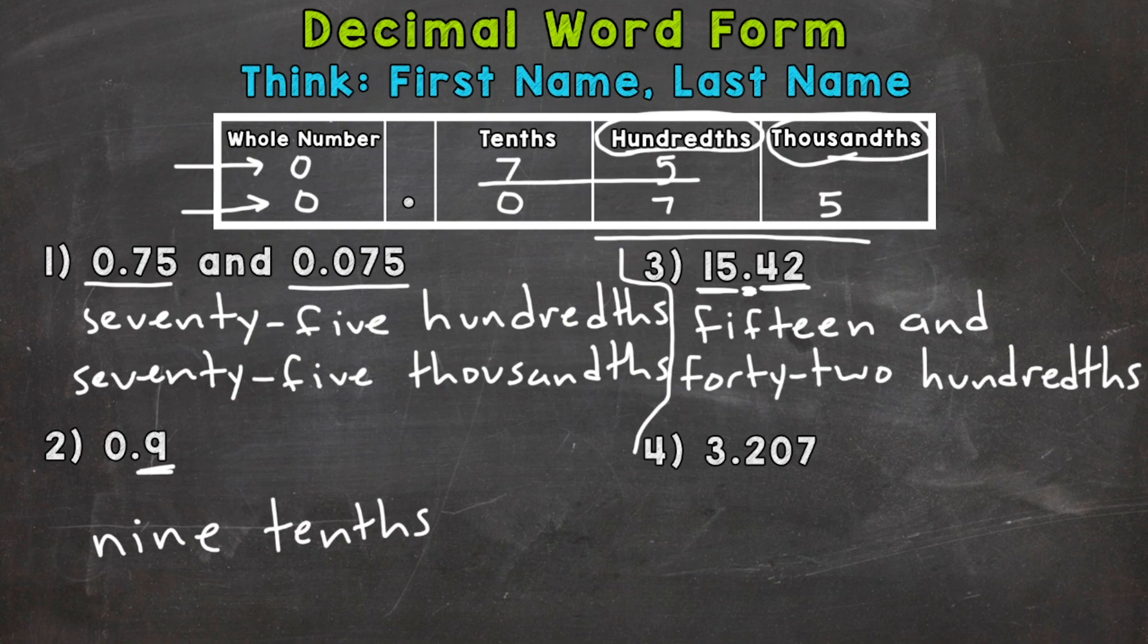Lastly, number four. So we'll start with the whole number. Read it as is. Three. And remember, the very important word to represent that decimal is and. So three and. Let's read this number as is for the first name. So 207. Two hundred seven. That's the first name.